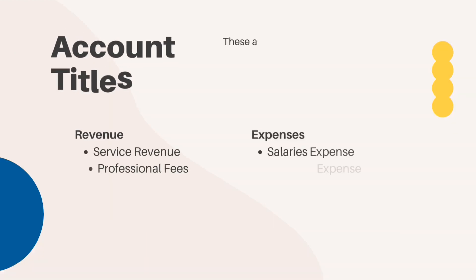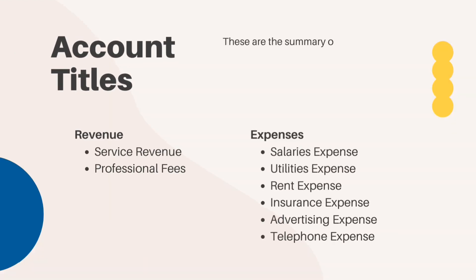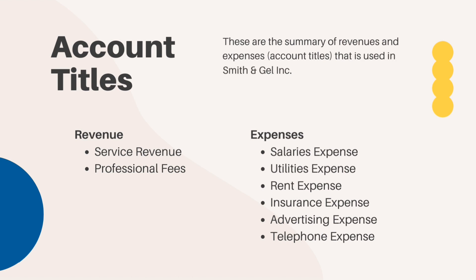Now let's look at account titles, which are a summary of revenues and expenses. The account titles used for Smith & Gell Inc. and B. Aquino Law Firm transactions are as follows. Under revenue: service revenue and professional fees. Under expenses: salary expense, utilities expense, rent expense, insurance expense, advertising expense, and telephone expense.